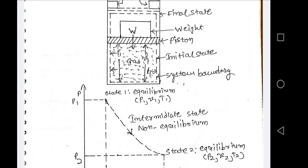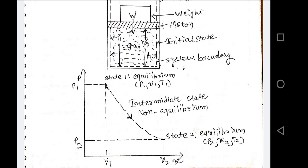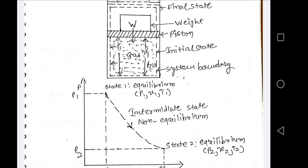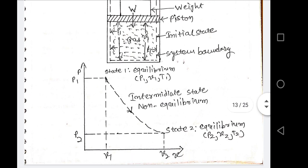Because as per the definition, when numbers of changes of state are taking place and all those changes are connected with a single line, it is known as a path of change of state. And when that path is well defined, it is known as a process. But here we have only initial and final conditions — P1,V1,T1 and P2,V2,T2 — with no intermediate conditions. So we cannot predict the path of the process or identify in which direction the process is exactly taking place.